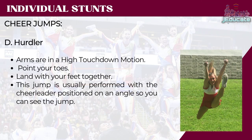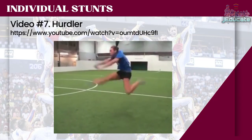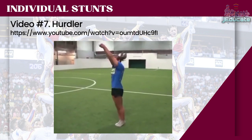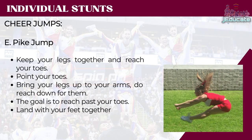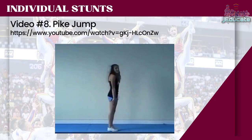Letter D: Hurdler. Arms are in a high touchdown motion. Point your toes. Land with your feet together. This jump is usually performed with the cheerleader positioned on an angle so you can see the jump. Video number 7: Hurdler. Letter E: Pike jump. Keep your legs together and reach for your toes. Point your toes. Bring your legs up to your arms — do not reach down for them. The goal is to reach past your toes. Land with your feet together. Video number 8: Pike jump.